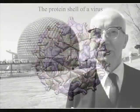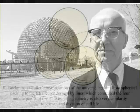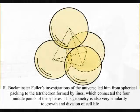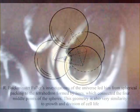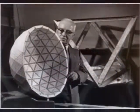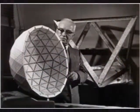Fuller's investigations of the universe led him from spherical packing to tetrahedron formed by lines which connect the four middle points of the spheres. This geometry is also very similar to the growth and division of cell life. He proposed that the tetrahedron was the most basic building shapes in nature, being one of the most stable geometric configurations.